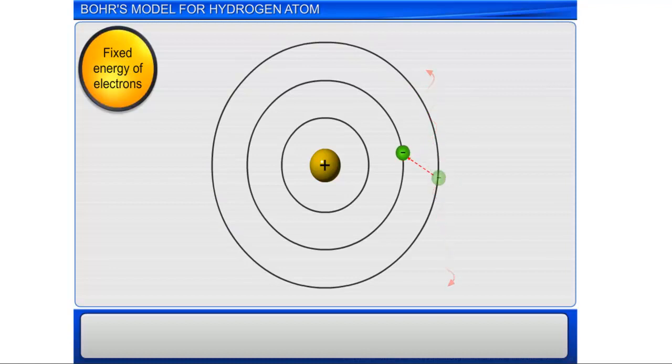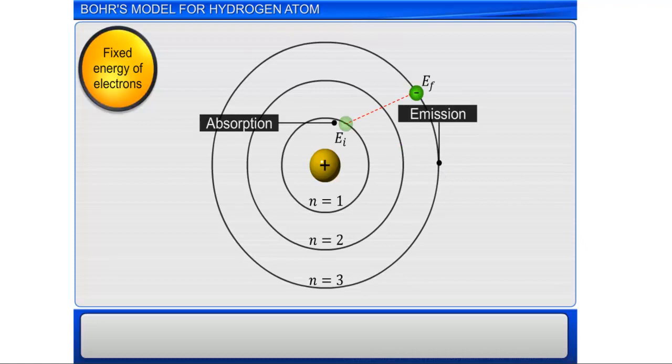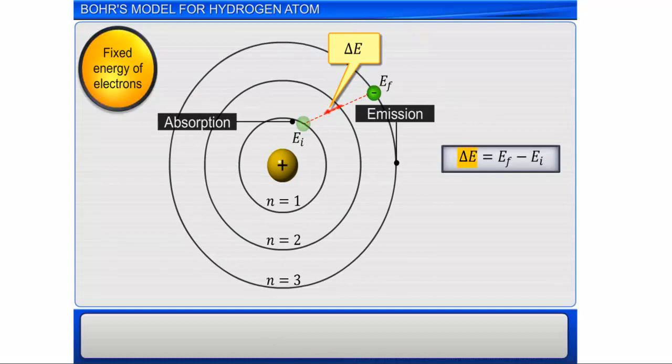So each emission or absorption of radiation energy represents the electron transition from one stationary orbit to another. The energy difference between the two orbits is given by equation delta E is equal to E final minus E initial.